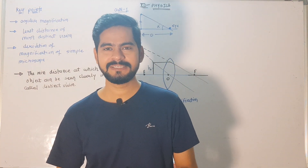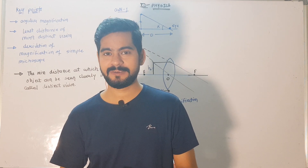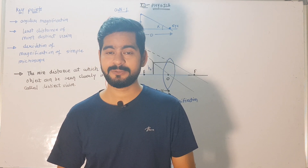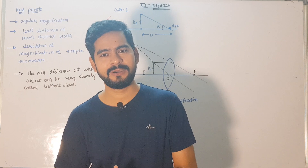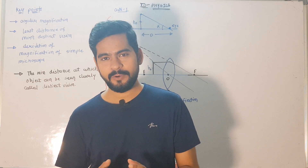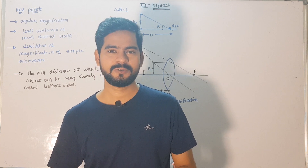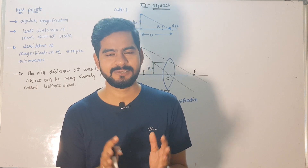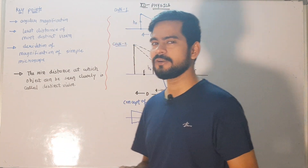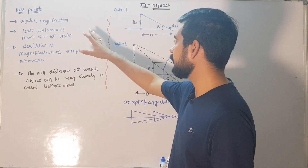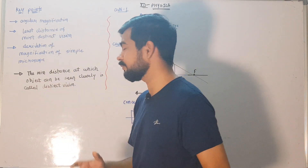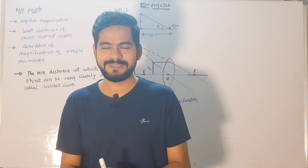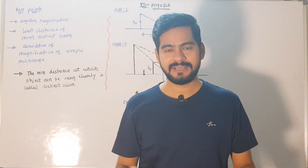Hello everyone, welcome back to the class of Sachin Sir Physics, the finest and easiest way to learn the concept. In this video we are going to talk about another point from the chapter Ray Optics and Optical Instruments — the second part of the chapter, all about optical instruments. The main point of this class is all about the microscope, covering simple microscope as well as compound microscope.